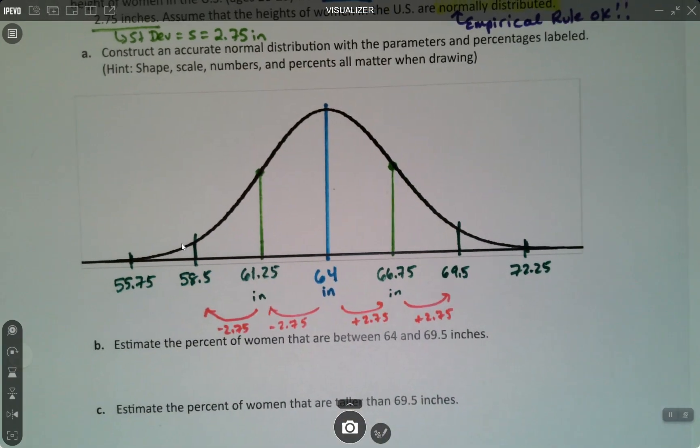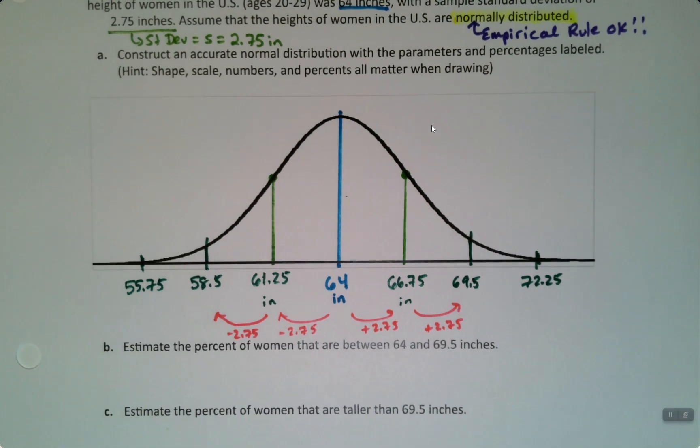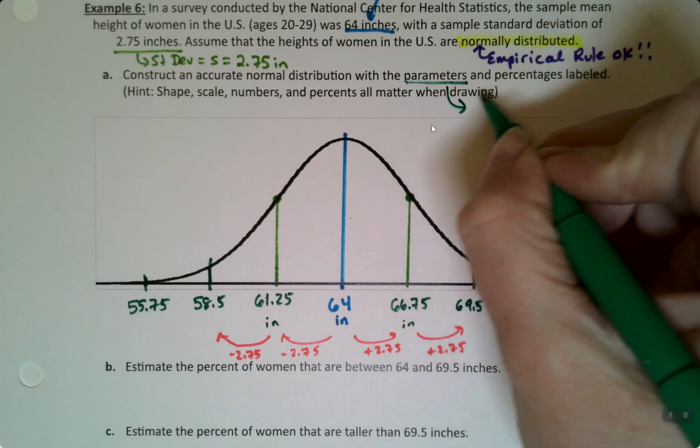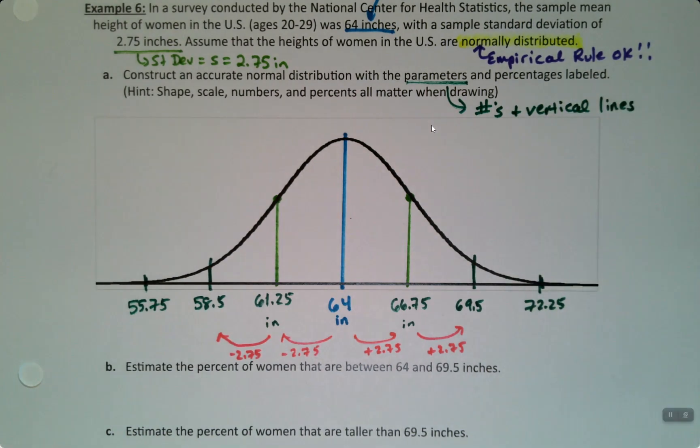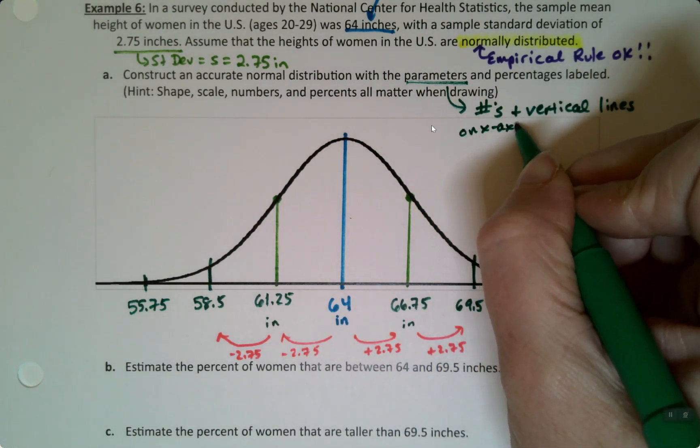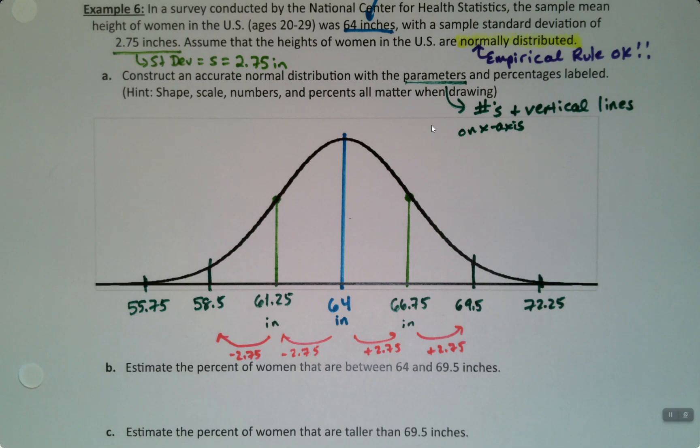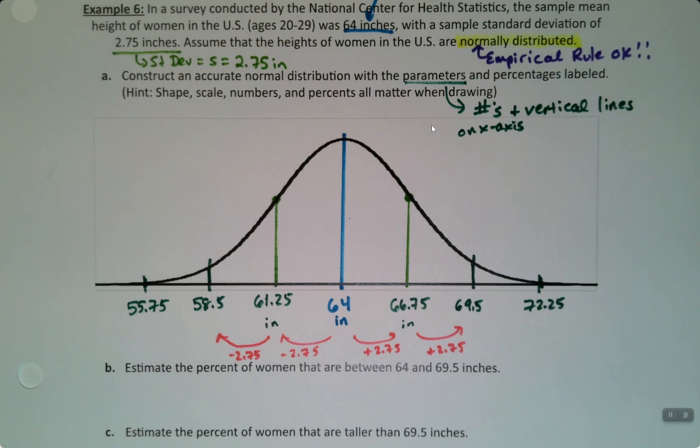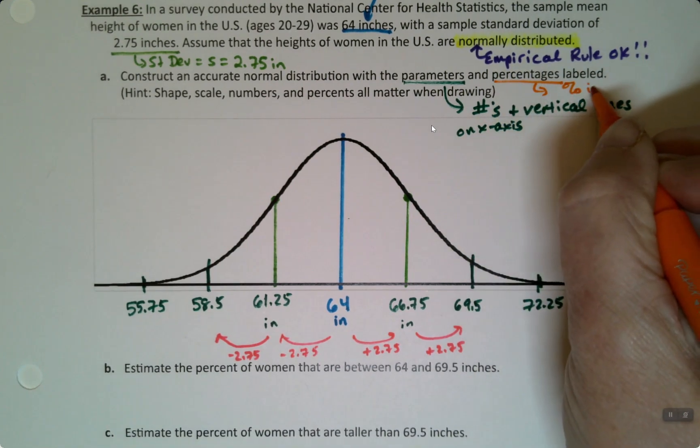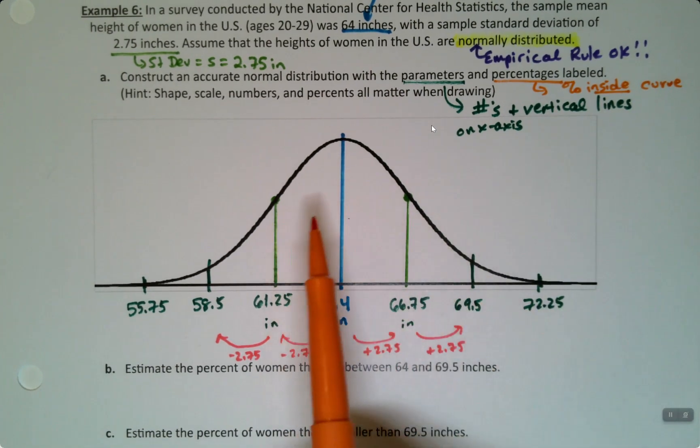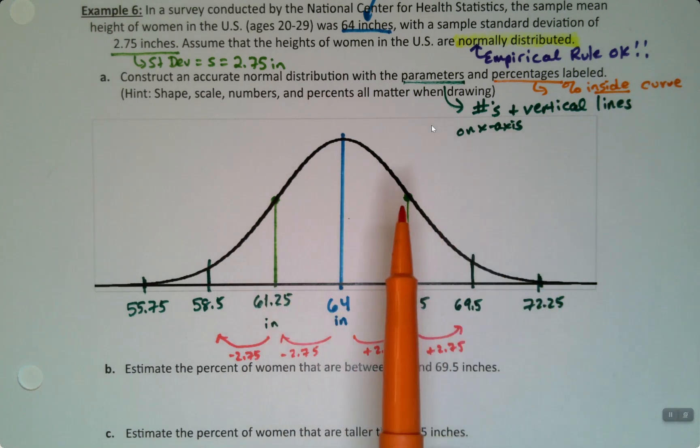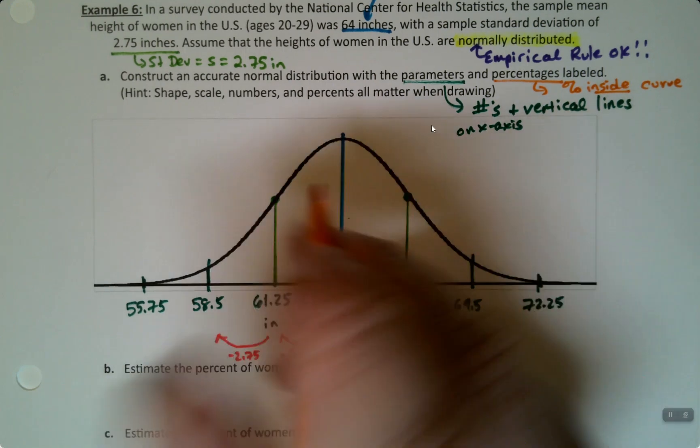So we're just going to fill those values in on this graph. And it keeps going and going, but we generally stop around 3 standard deviations, unless specifically instructed to do otherwise. Now what about the percentages? Well, it says to label the parameters, right? So the parameters is putting in those numbers on the number line. That's numbers and vertical lines. That's what the parameters means.